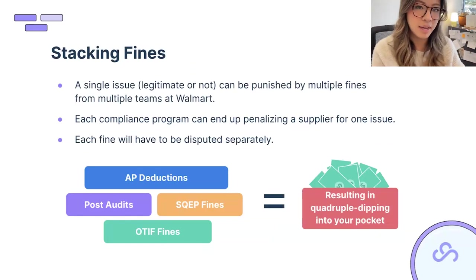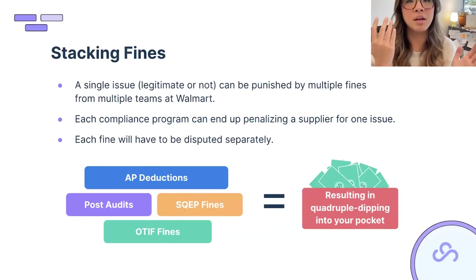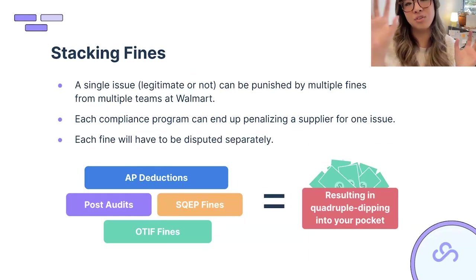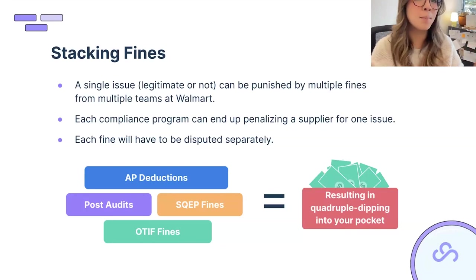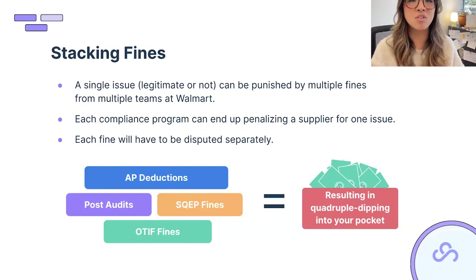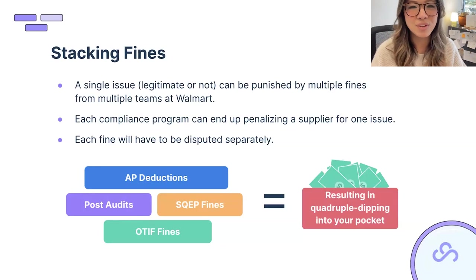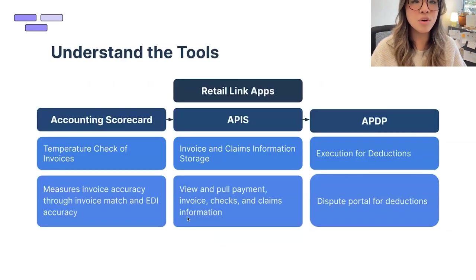Walmart's four departments don't talk to each other, so they won't automatically reverse things. If you thought getting the deduction back meant you were done — no, you have to fight all four. As G.I. Joe says, knowledge is power. Hopefully you can start tackling these more strategically. For a high-level overview of the tools, if you're managing deductions there are three main apps we'd recommend: Accounting Scorecard, APIS, and APDP.